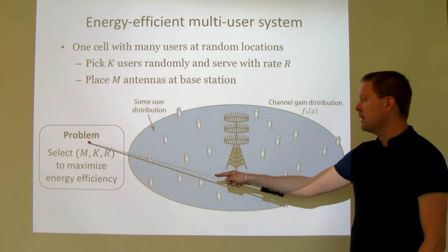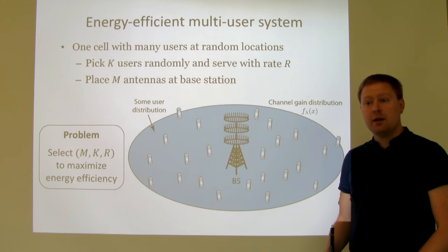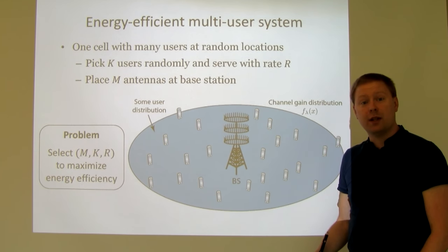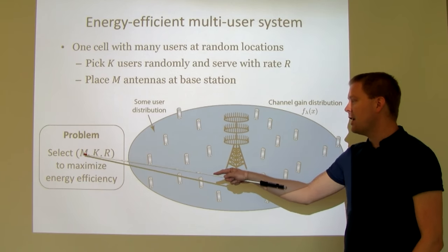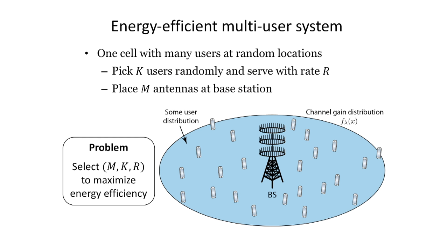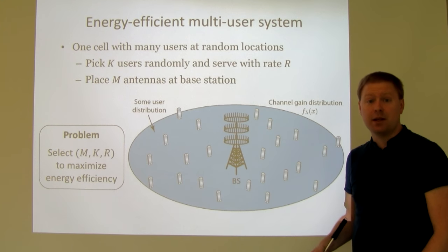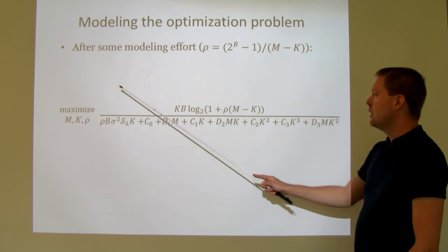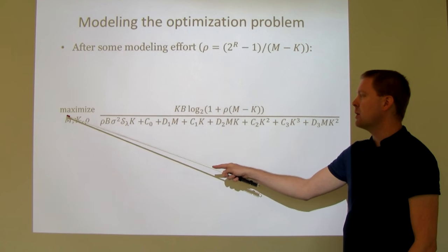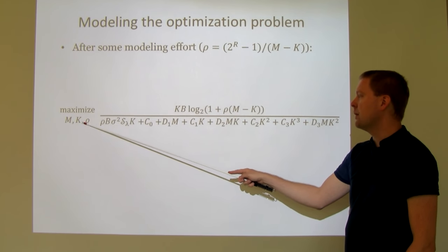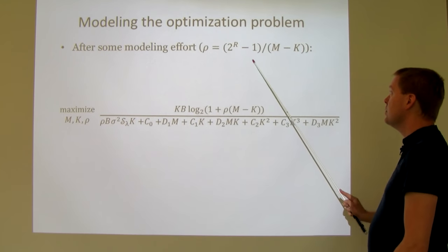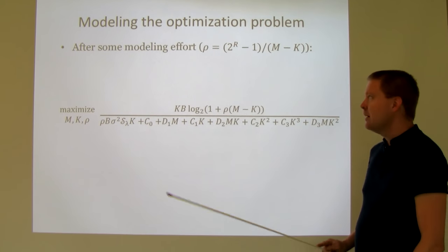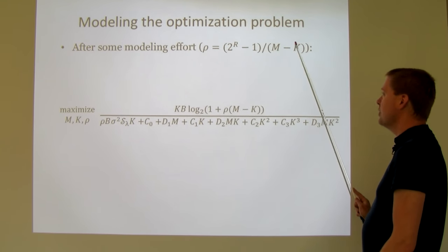To do that, I need to model the energy efficiency such that M, K, and r appear as variables in the expression. We eventually reached a maximization problem with respect to M and K, using rho — defined as 2^r minus 1, which converts rate to SINR — and dividing by M minus K under certain assumptions like zero-forcing transmissions. The result is a ratio: in the numerator, the average sum rate — K times bandwidth times log2(1 + SINR) — and in the denominator, the total power including circuit power.